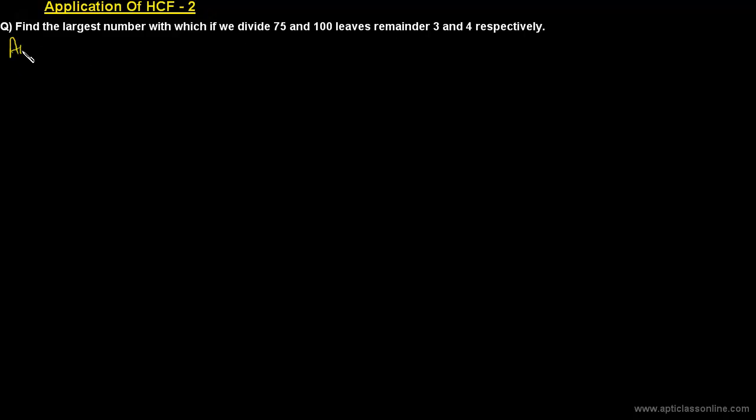In this class we will discuss the application of HCF with the help of this example: find the largest number with which, if we divide 75 and 100, it leaves remainders 3 and 4 respectively. So we have to find a number which is the largest, and with that number if we divide 75 and 100, it leaves remainders 3 and 4.